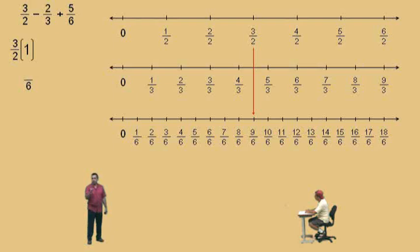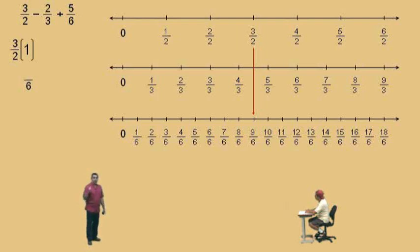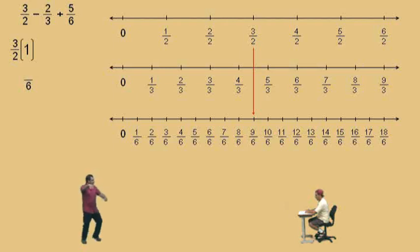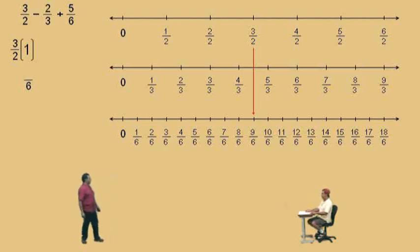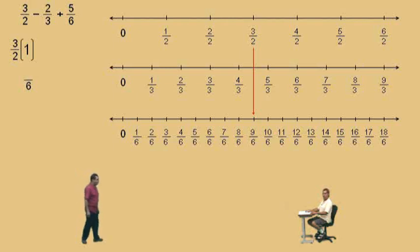We're going to write 1 as a fraction. Now, here's where it gets tricky. In order to do this, I have to jump ahead and tell you how to multiply fractions. Pay attention to this, Charlie. The way you multiply fractions is you go straight across the top and straight across the bottom.